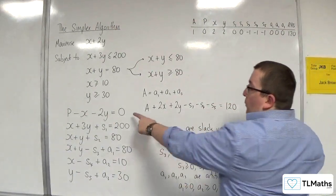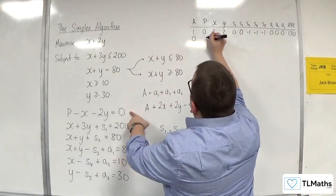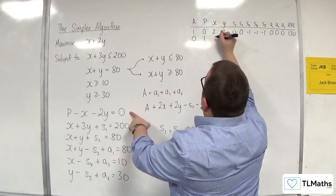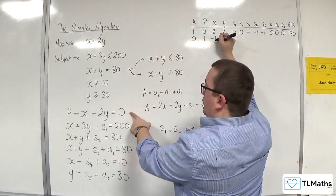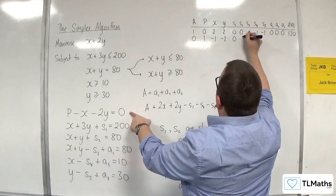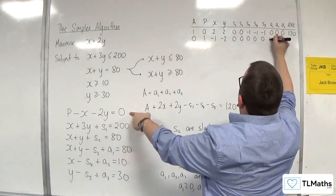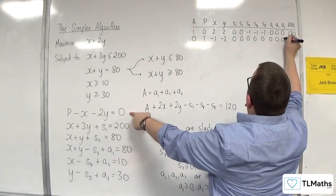Then the p row: 0, 1, minus 1, minus 2, and the remaining entries are all 0s. The right-hand side is 0.